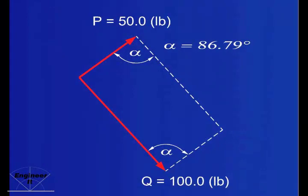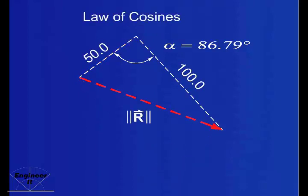Now that we have these interior angles, let's investigate the resultant vector R. The law of cosines works well for oblique triangles. We can find that the magnitude of R is 109.27 pounds.